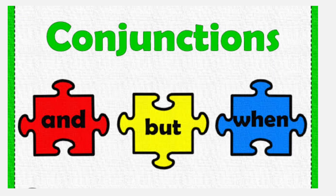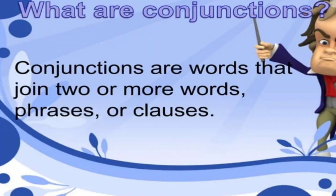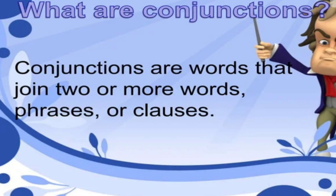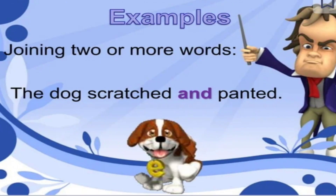Good morning students. Today I will study about what are conjunctions. A conjunction is a word that joins two words, phrases, or clauses in a sentence. Phrases are a group of words that make a grammatical unit — example: 'a red marker.' Clauses require one subject and one verb. There are two types of clauses: dependent and independent.